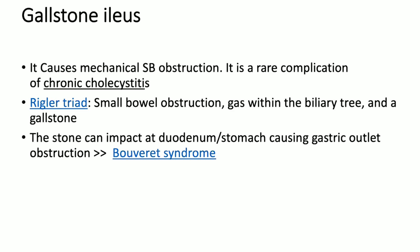Gallstone ileus causes a mechanical small bowel obstruction and is a rare complication of chronic cholecystitis. The expected Rigler's triad is not 100% seen in all patients. Sometimes you see the small bowel obstruction and the stone but not the pneumobilia. Sometimes you cannot see the stone clearly but you can see the pneumobilia and the fistula track. If you see all three — the obstruction, gas in the biliary tree (pneumobilia), and the gallstone itself — then it's called Rigler's triad.